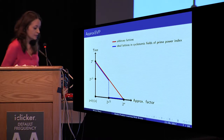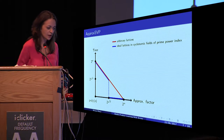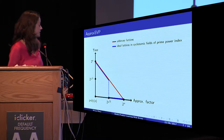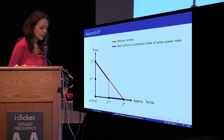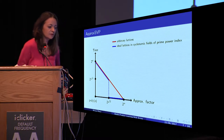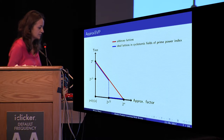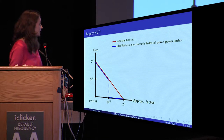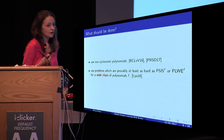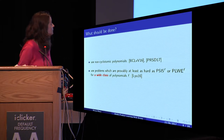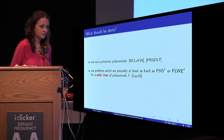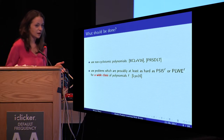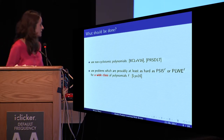As you can see, the best algorithm for finding a short vector in arbitrary lattices for an approximation factor of 2 to the square root of n takes 2 to the square root of n time, while the best algorithm for finding such a short vector in ideal lattices takes only polynomial time. So the question we should ask is: what should be done? We have evidence that approximate SVP could be easy — in fact, is easy — for some polynomials.